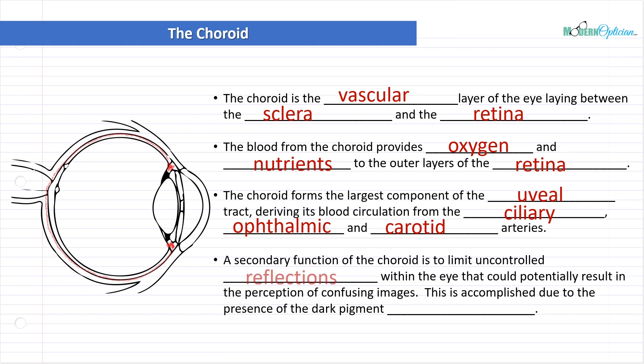Now, a secondary function of the choroid is to limit uncontrolled reflections within the eye that could potentially result in the perception of confusing images. This is accomplished by the presence of the dark pigment melanin. So this is more of a fun fact. I'm going to mention it in more detail when we start talking about the exact mechanism of how the eye produces images and vision.